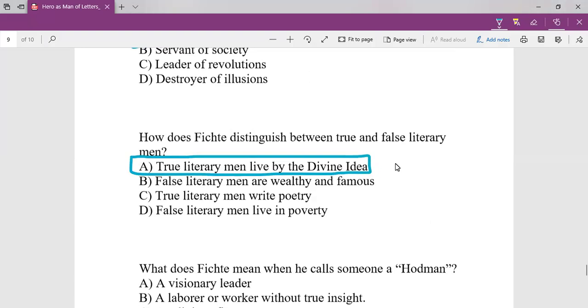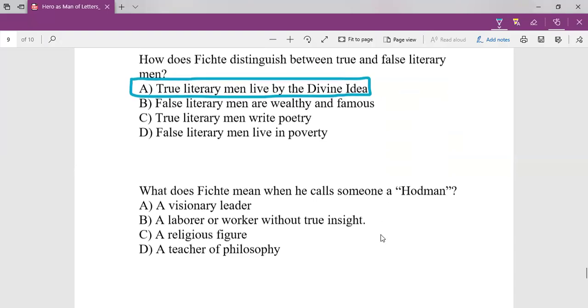In another way, true literary men communicate what comes out of inspiration, whereas false literary men do not go by the inspiration. They write anything that they want in order to make money. What does Fichte mean when he calls someone a hodman? A hodman is the false literary writer. A false literary man is a hodman who labors or works without true insight. He is a false writer.